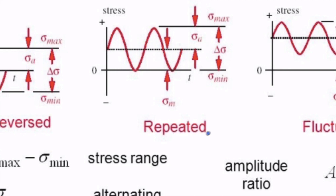The second type is a bit different from the previous one — it is called the repeated cycle or repeated cyclic stresses. In this case, the stress value is non-zero at the beginning; there is some magnitude of stress in the material. It keeps increasing, reaches a maximum value, goes back to the mean value, and reduces to zero. When it reaches zero, it increases again. In this stress cycle, there is no compression — only tension, happening entirely in the positive y-axis.